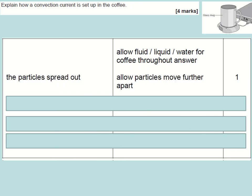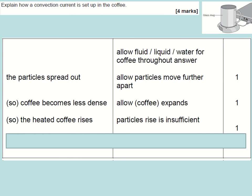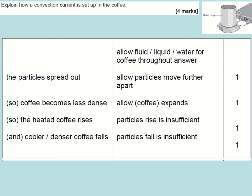So the marks were four. Number one, saying the particles spread out or the particle separation increases. Number two, this causes the coffee to become less dense. Number three, the heated coffee rises. And number four, the cooler coffee falls to the bottom. So the really important thing with these questions is that you don't just tell me a generic definition for convection. You must link it to the example. So all you needed to keep referencing here was the thing that has got particles that are moving is the coffee.